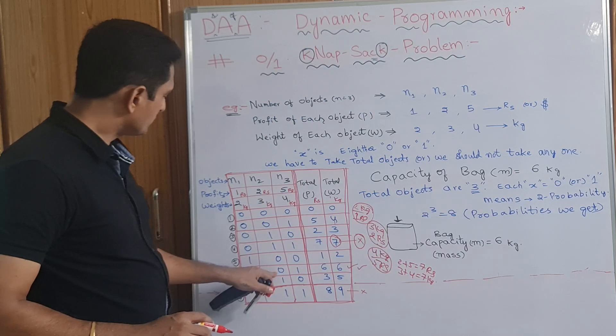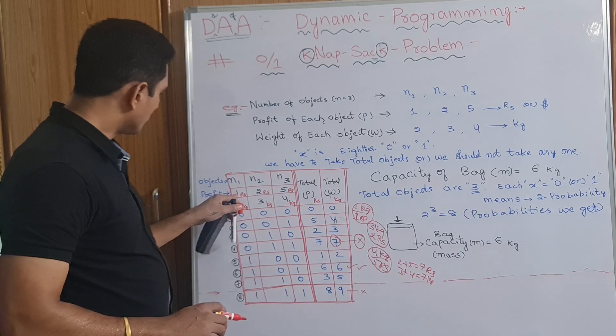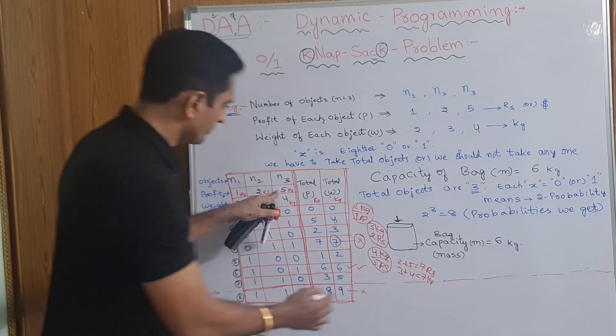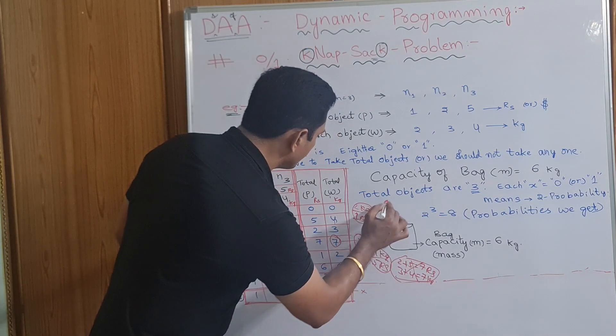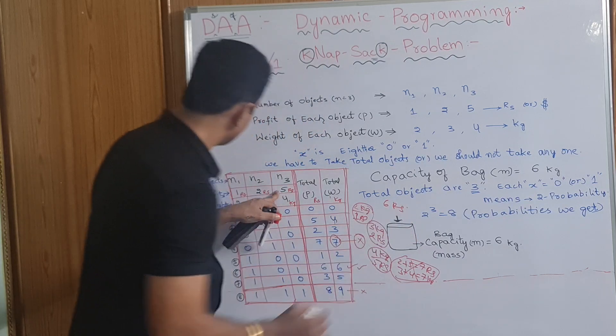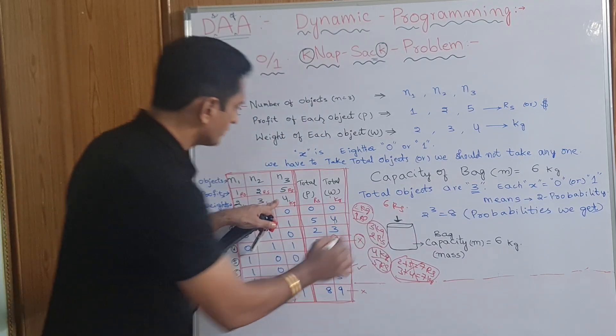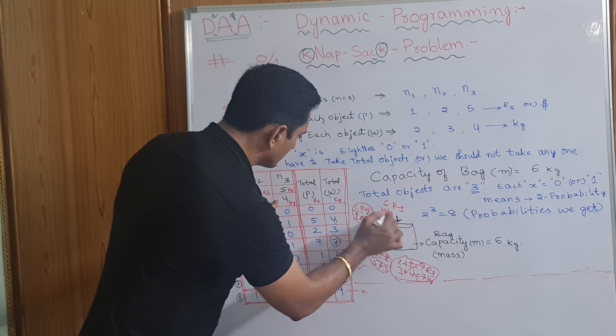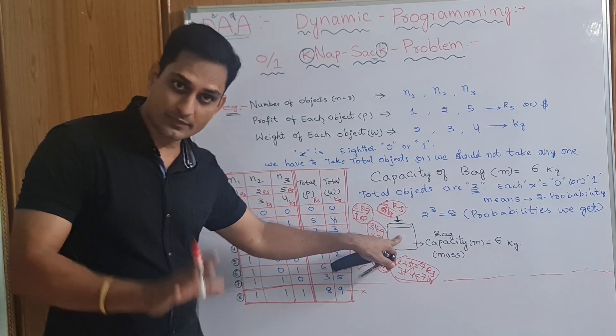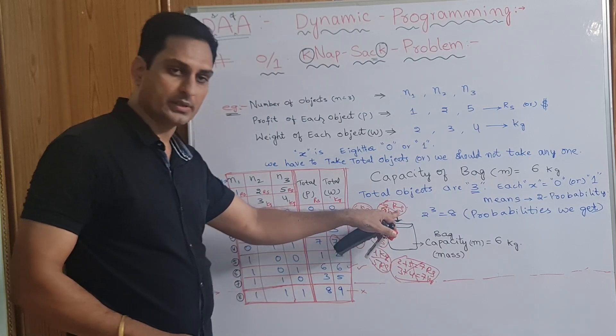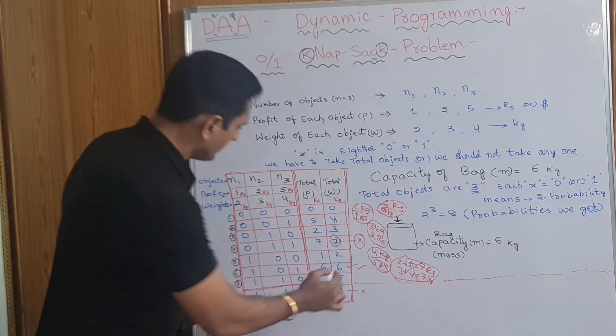And here, 1, 0, 1. Here, this 1 plus 5, 6 rupees. This is also over. This is not taken. 6 rupees we will get. And 2 plus 4, 6 kgs. 2 plus 4. 6 kgs of the bag filled. Maximum capacity is filled. And we got 6 rupees. So, this we will be taking.